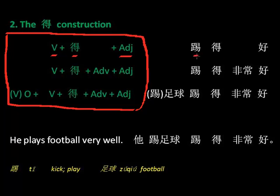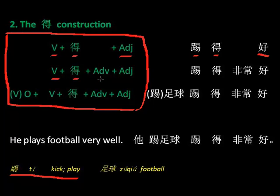比如说，踢得好。踢 is a verb。这是 the basic form of this construction：踢得好。Then more complicated — 踢得非常好，就是动词加得，还有一个 adverb 加 adjective。比如说，踢得非常好，very well。